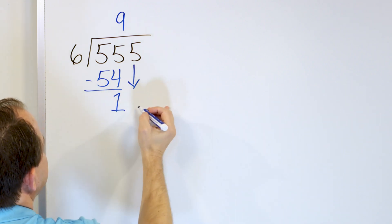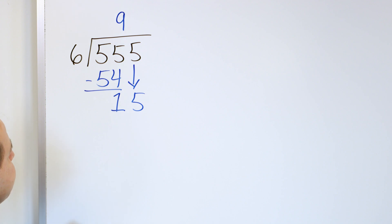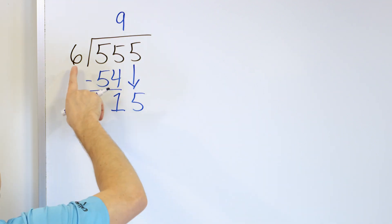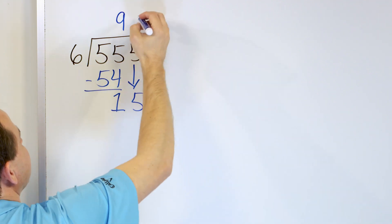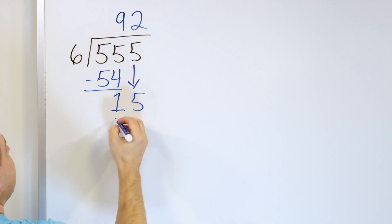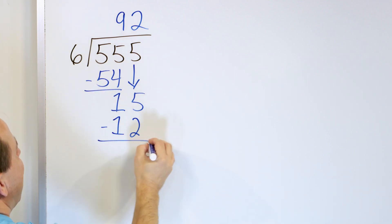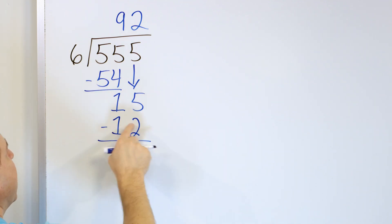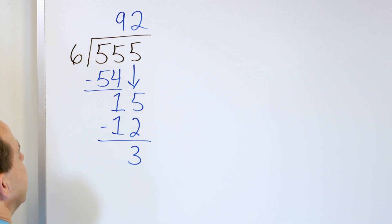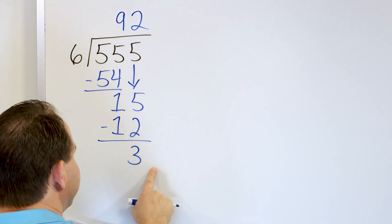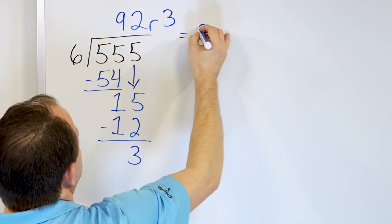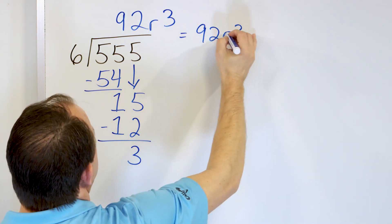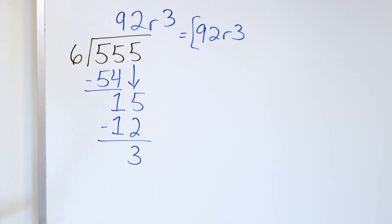I drag the next digit down, which is a 5, giving me 15. 6 times something is 15 — 6 times 2 is 12, and 6 times 3 is 18, which is too big. So 6 times 2 is 12. Multiply 6 times 2 and get 12, then subtract: 5 minus 2 is 3, and 1 minus 1 is 0, so I get 3. There are no more digits, and 3 is less than 6, so I have a remainder of 3. The answer is 92 remainder 3.